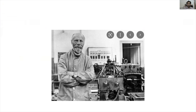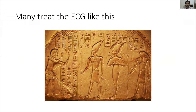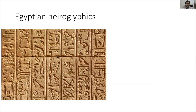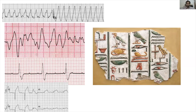This is William Einthoven, who first invented the electrocardiogram and gave us an electrical window into the heart. The problem is many people treat ECG something like this — can anyone say what this is? People treat electrocardiograms like Egyptian hieroglyphics. This is how people see ECGs: pictorial representations of birds and dogs. Both are basically pictorial representations — your ECG on the left is similar to hieroglyphics.